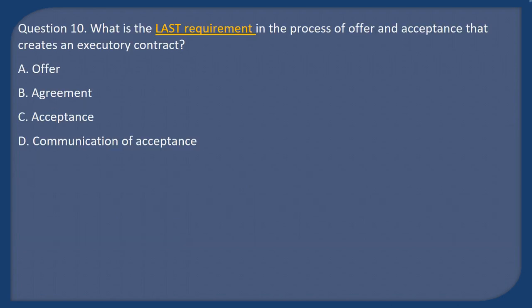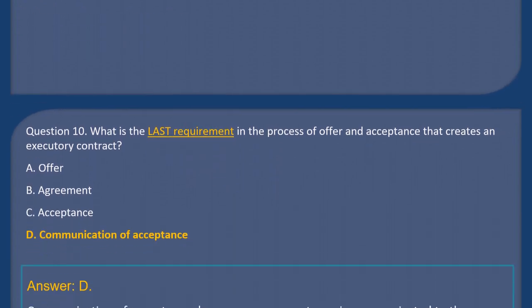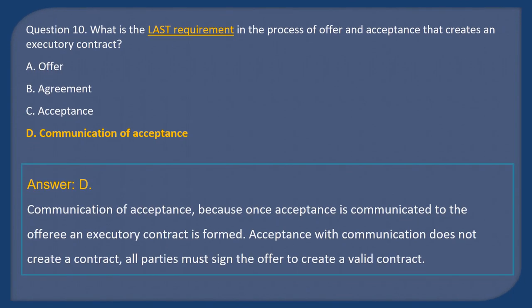Question 10: What is the last requirement in the process of offer and acceptance that creates an executory contract? A) Offer, B) Agreement, C) Acceptance, D) Communication of acceptance. Answer: D. Once acceptance is communicated to the offeree, an executory contract is formed. Acceptance without communication does not create a contract — all parties must sign the offer to create a valid contract.